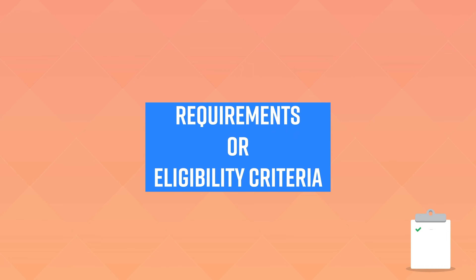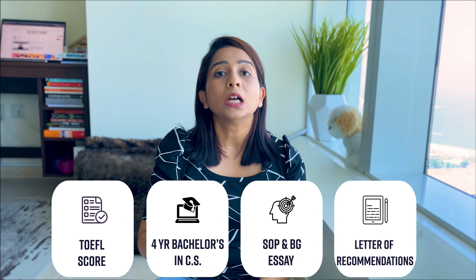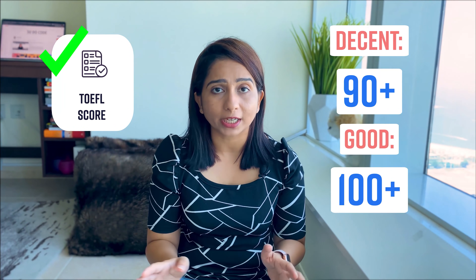Let's start with the requirements needed to apply, or how do you know if you're eligible to apply. There are four requirements and I'll go over them one by one. The first requirement is a TOEFL score. You need to write the TOEFL exam before you start your application process and you should get a decent score — around 90 or 90 plus. A score of 100 plus is good and ensures that one of your requirements is fully checked.